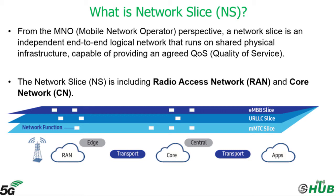As you see in this image, we have three kinds of services: enhanced mobile broadband slice, ultra-reliable low latency slice, and massive machine type communication. Each one of them has an agreed quality of service. Network slicing also includes, from a network architecture perspective, the radio access network or RAN part and the core network or CN part.